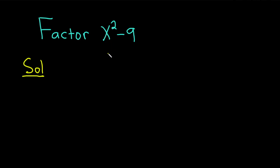There's a formula that says if you have a squared minus b squared, this is equal to a minus b times a plus b.